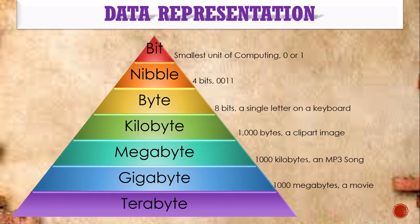So what are the different representations of data? A bit is nothing but 0 or 1 — it is the smallest unit of computing. Whatever language you give, whatever data you type, everything will be converted into 0s and 1s. A nibble is a 4-bit combination — for example, 0, 0, 1, 1 is a nibble. A byte means 8 bits. In 8 bits, it can store a single letter. Each single character on the keyboard represents 1 byte.